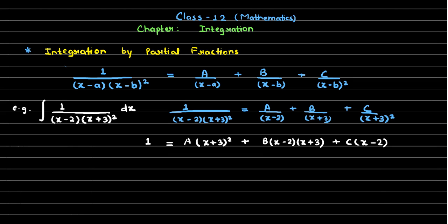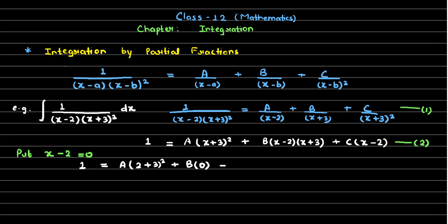A student suggests putting x minus 2 equal to zero. So first we put x equals 2: on the left hand side we have 1, and on the right hand side A times (2 plus 3) squared plus B times zero plus C times zero. This gives A times 25 equals 1, so the value of A is 1 over 25.